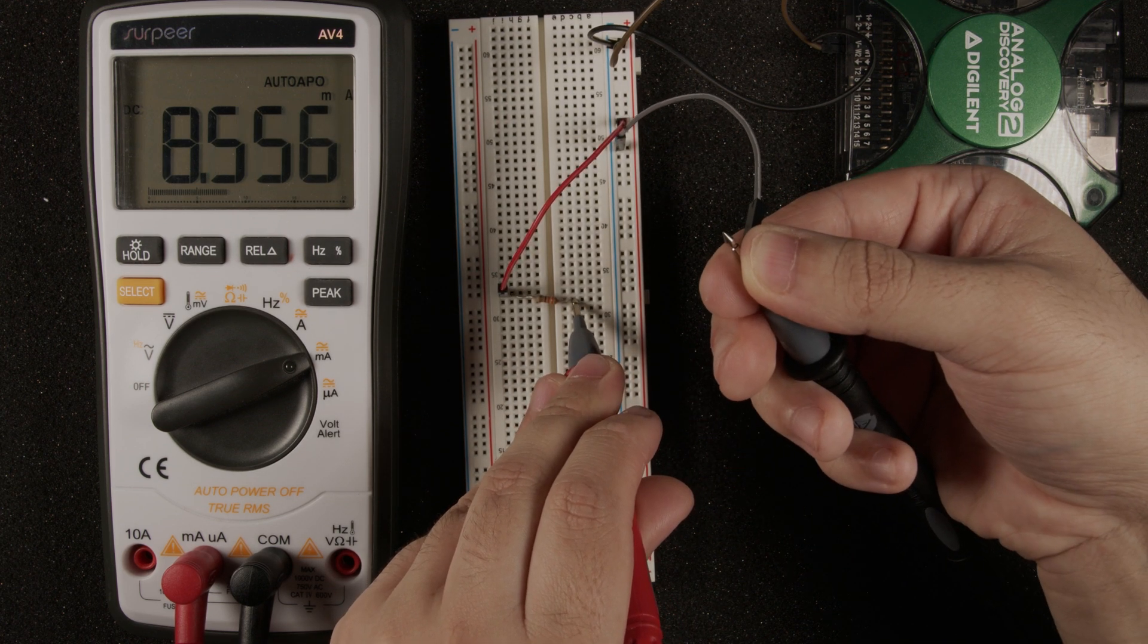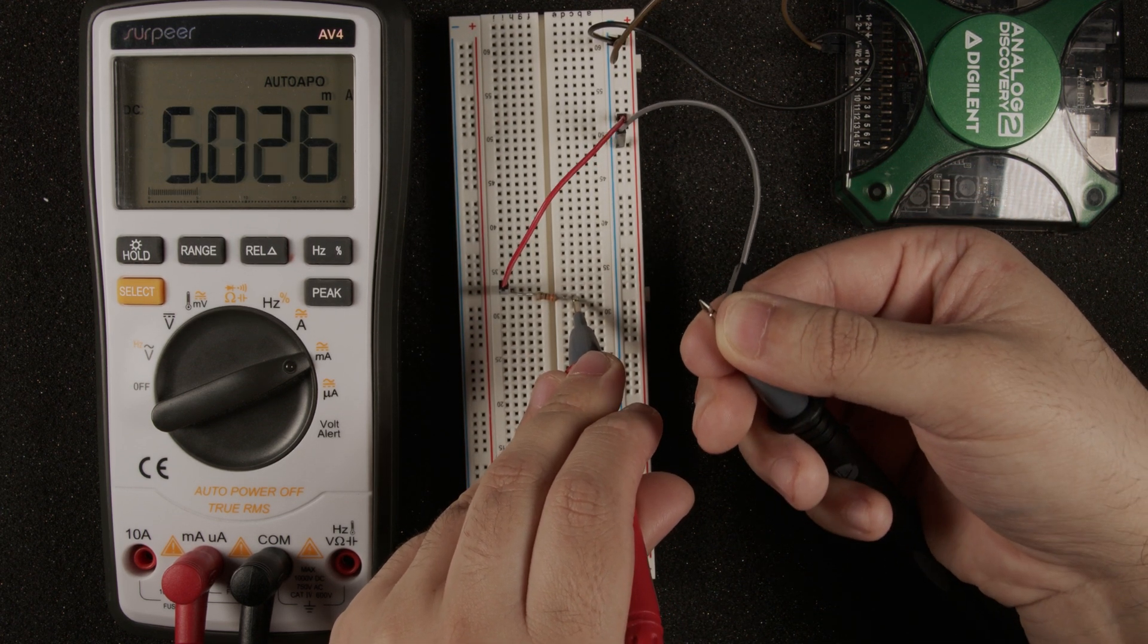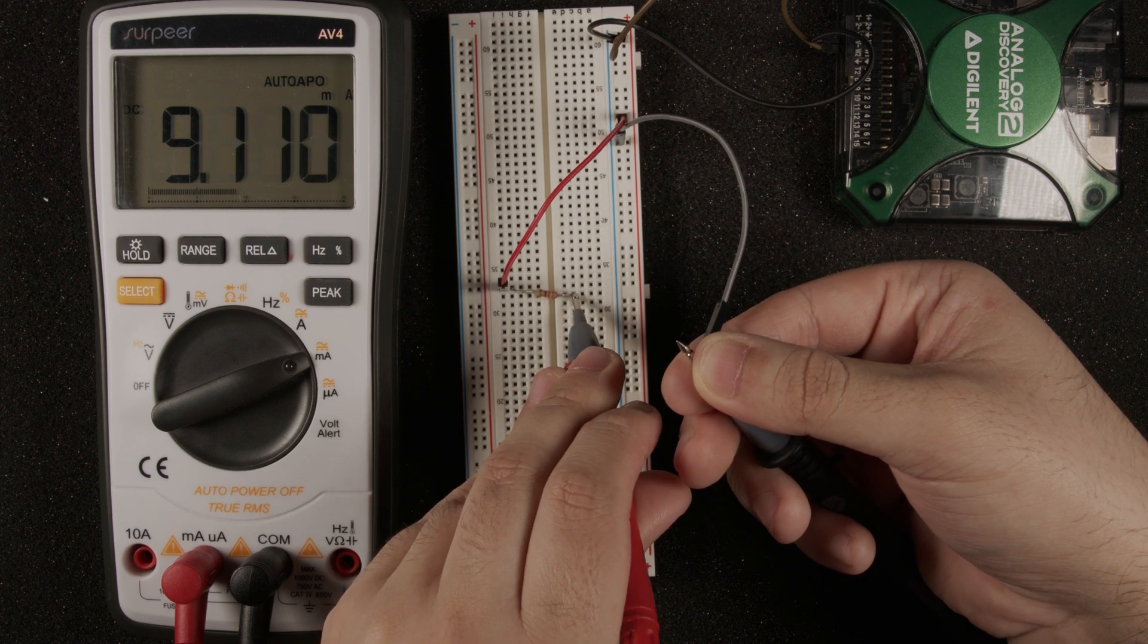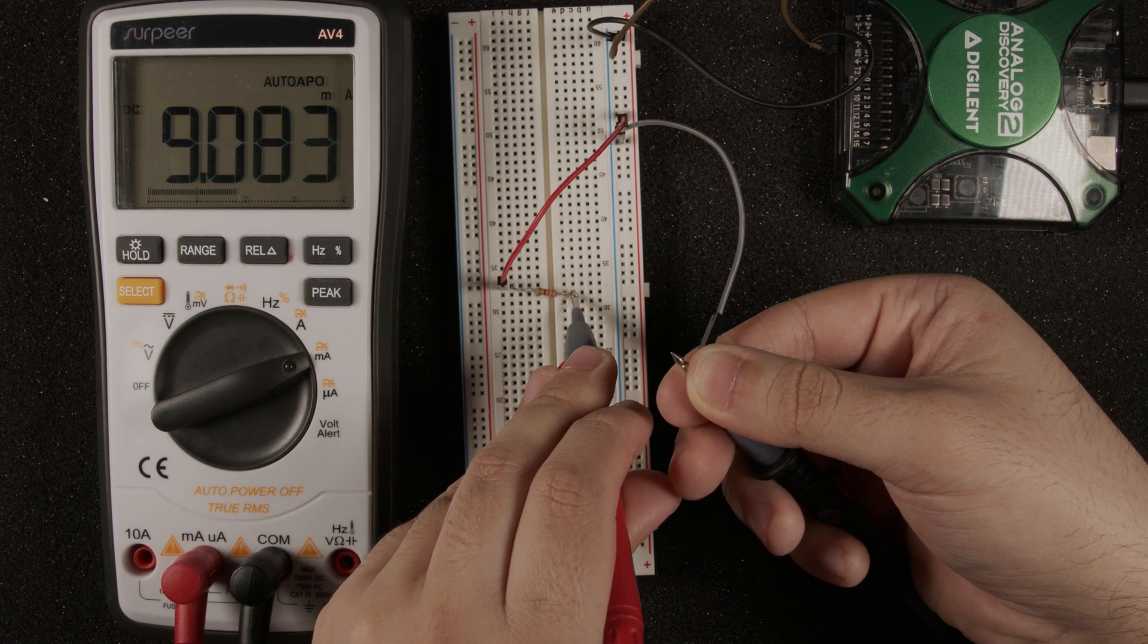And I am able to touch this probe like this because there is very low voltage. This is a low voltage circuit. If you were doing a higher voltage application, you would not want to touch the circuit.